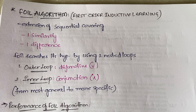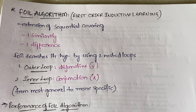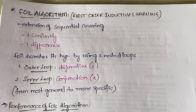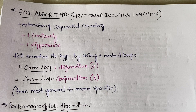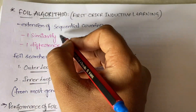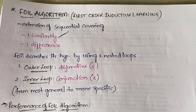Even though FOIL is an extension of sequential covering, there are differences between them. One similarity is that both learn one rule at a time and remove the positive examples covered by that rule. In sequential covering we learn one rule at a time, segregate all positive values and remove them — the FOIL algorithm does the same.